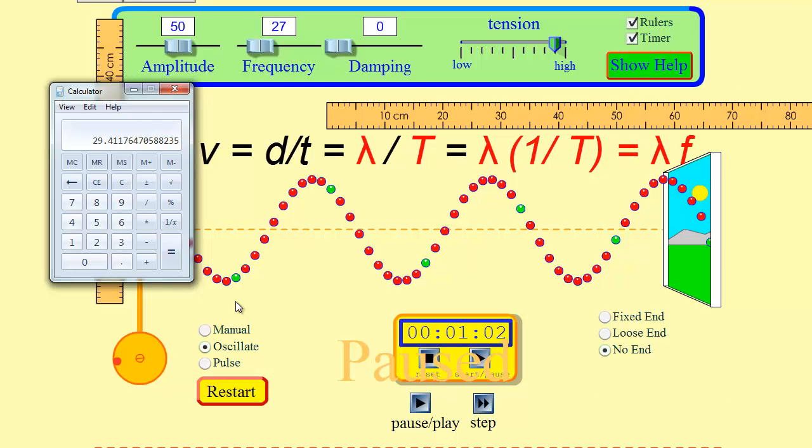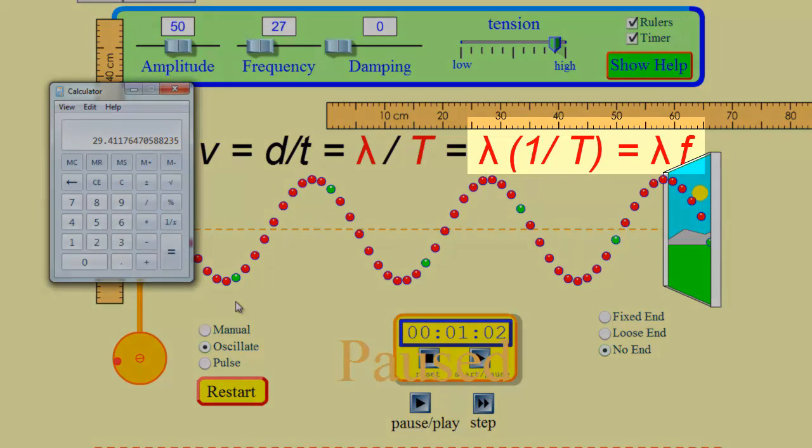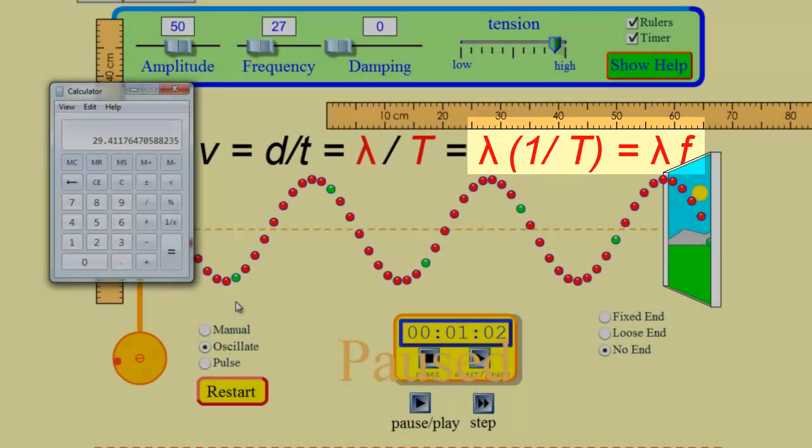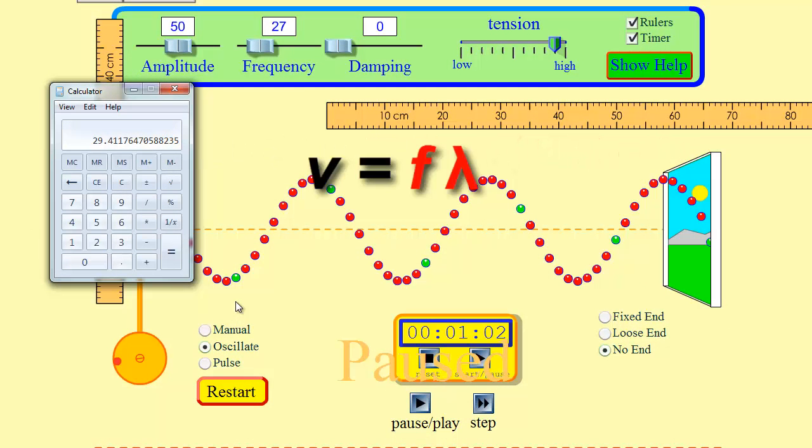Now we also know that 1 over the period, 1 over T, is the same thing as frequency. So I can replace that 1 over T with F and I end up getting my universal wave equation which says V is frequency times wavelength. Thanks.